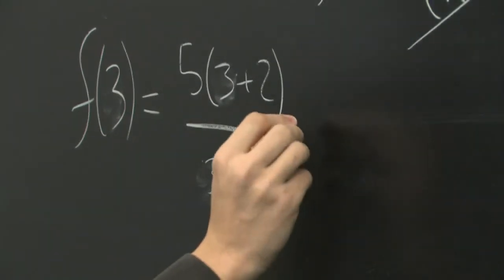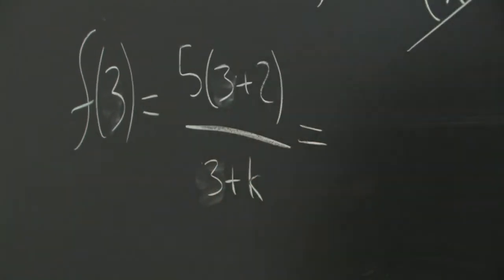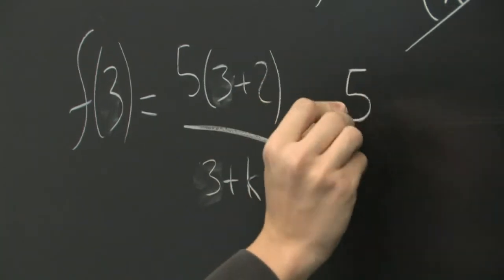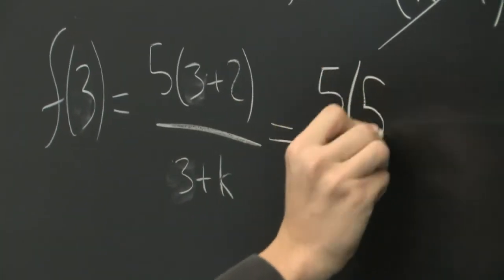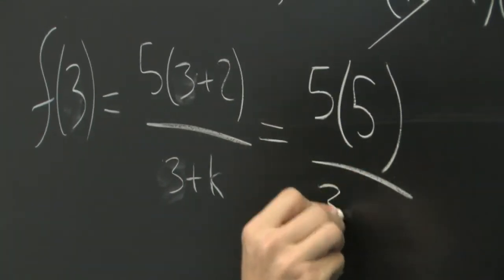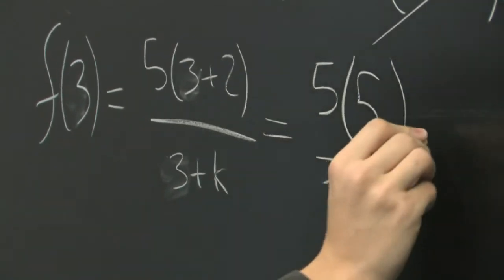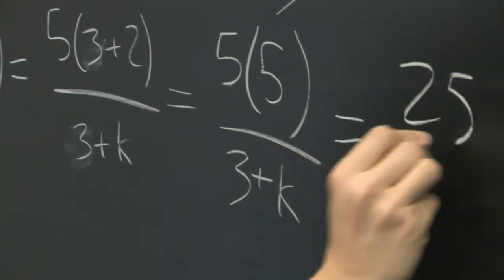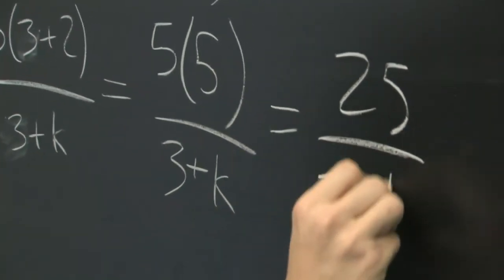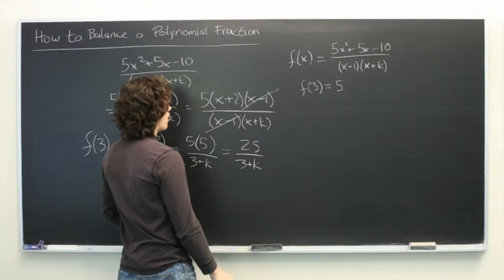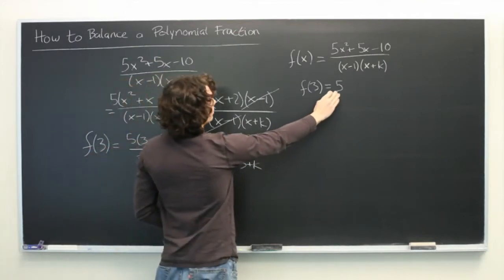So we get 5 times 5 in the top and (3 plus k) in the bottom, which equals 25 over (3 plus k), and we know that this is going to be equal to 5.